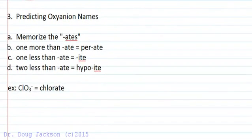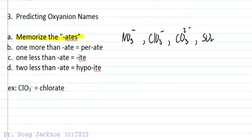So predicting oxyanion names. We may not memorize all of the polyatomic ions, but we do need to memorize the -ates. The nitrate, sulfate, or excuse me, nitrate, chlorate, and then carbonate is 2 minus, sulfate is 2 minus, and then phosphate is 3 minus. So nitrate, chlorate, what if we had bromate? Well, same column, same generic formula, iodate. So not too bad, but nitrate, chlorate, carbonate, sulfate, phosphate.